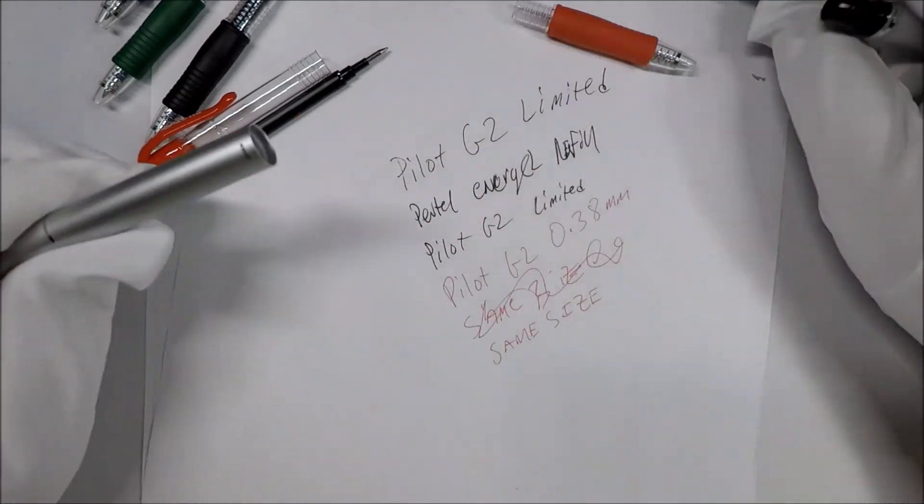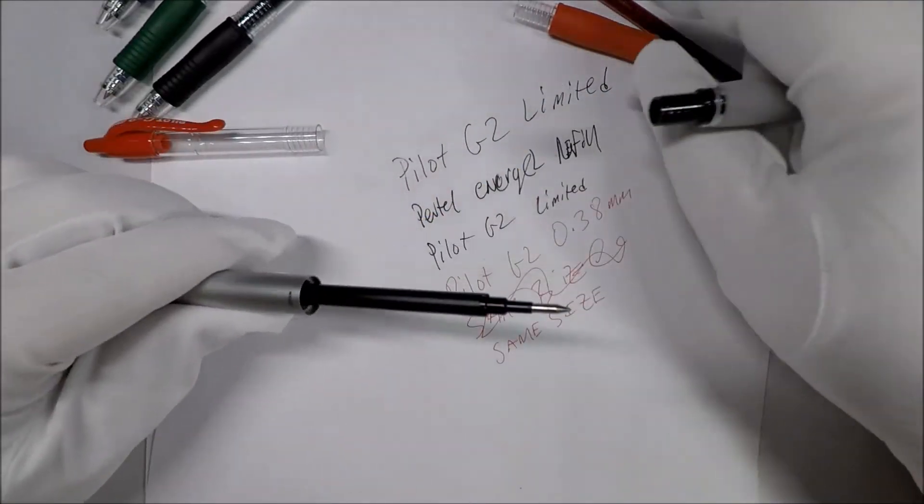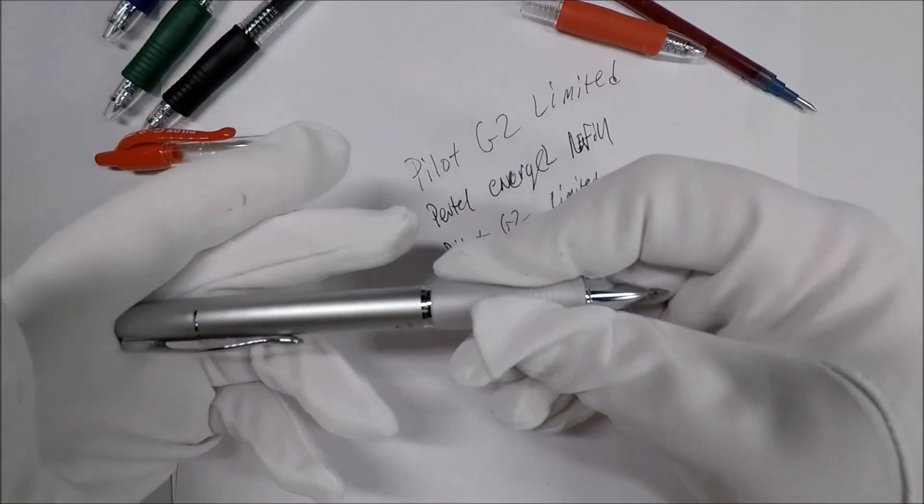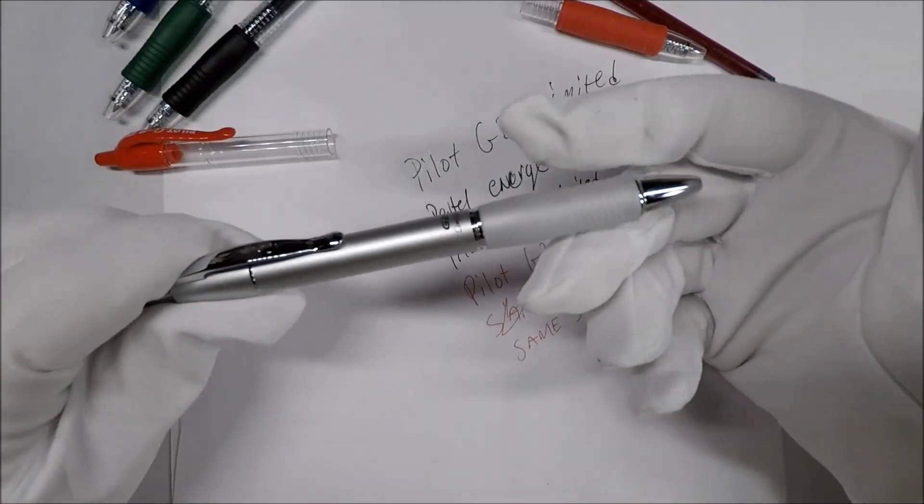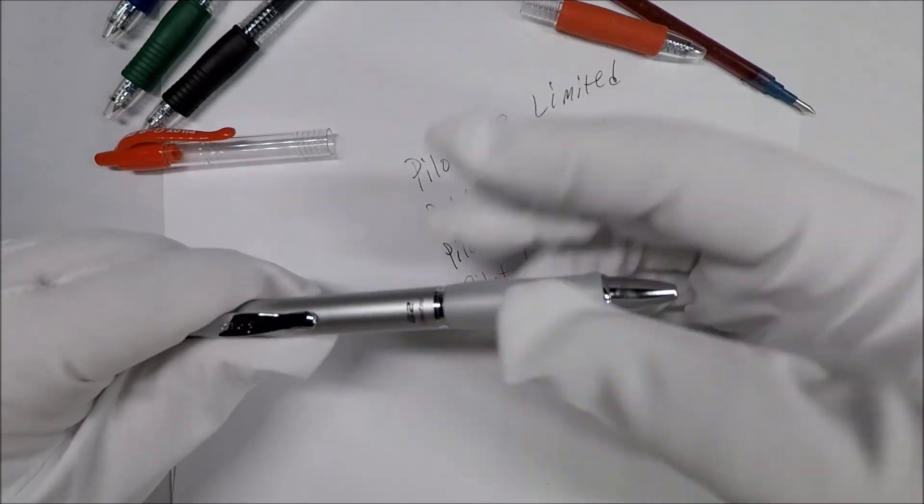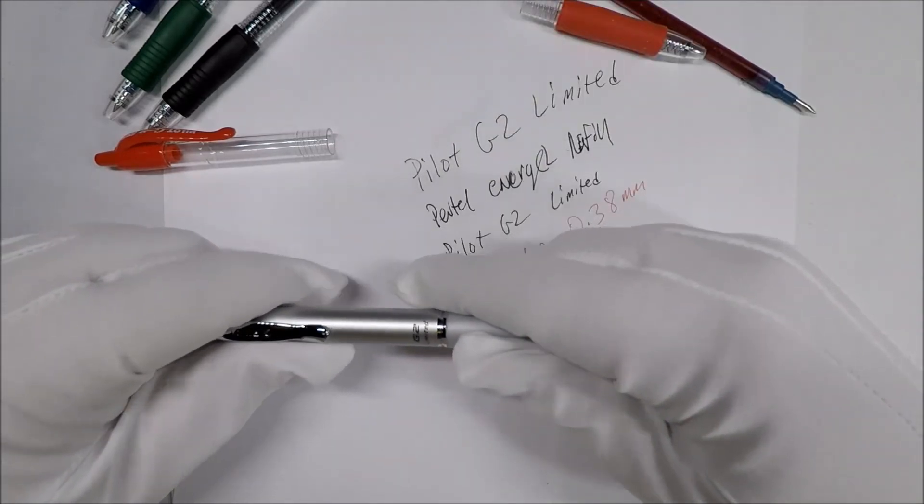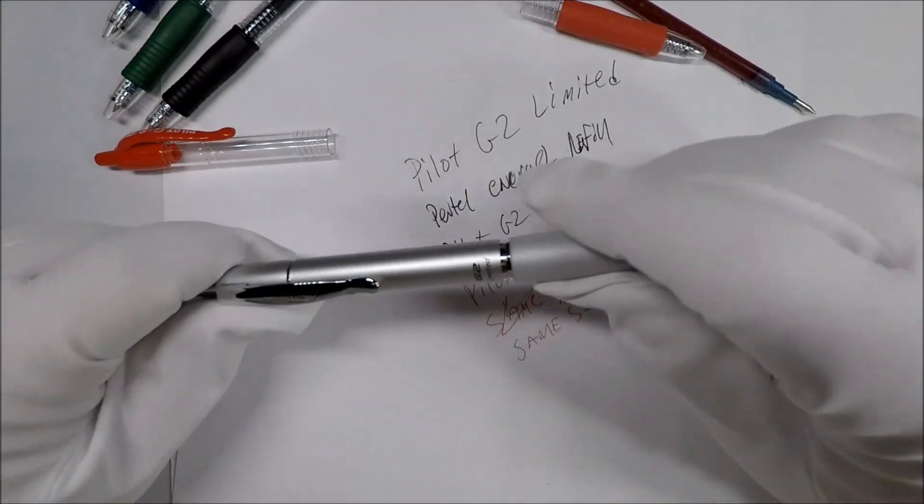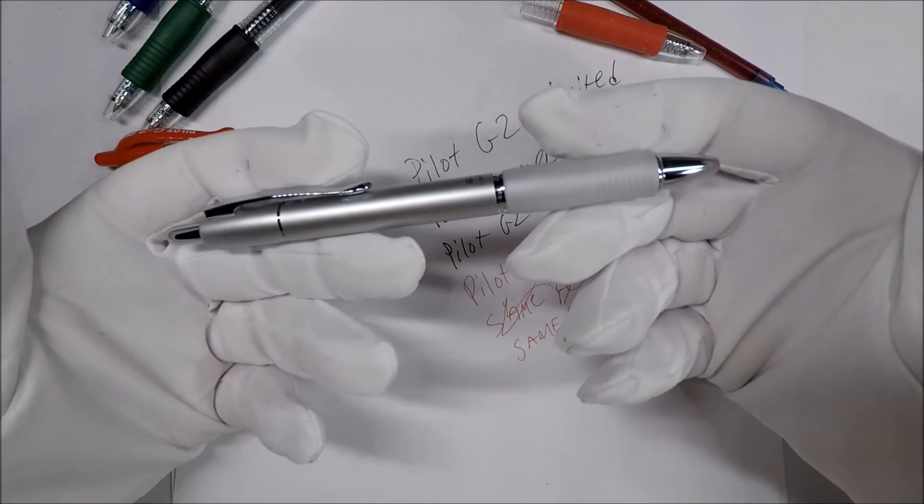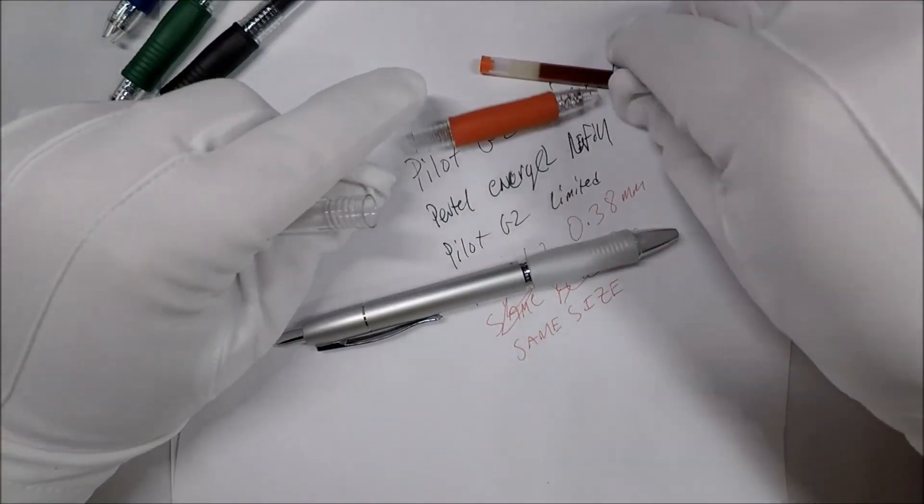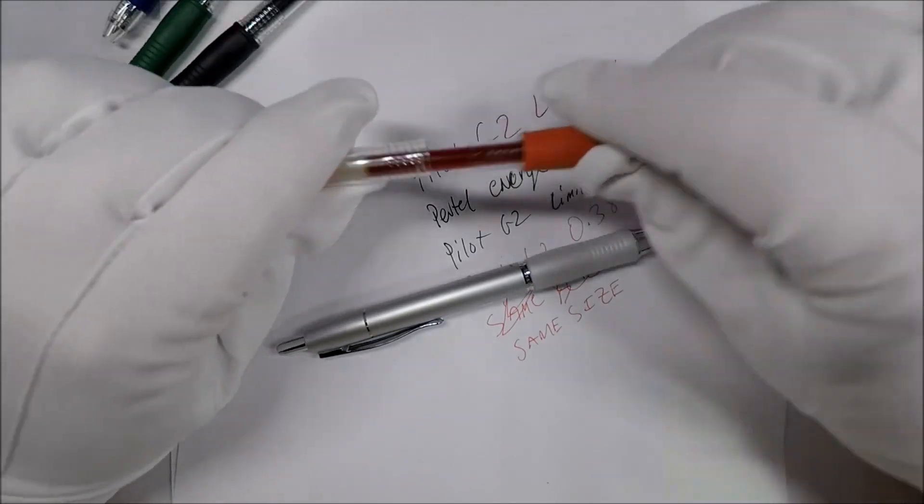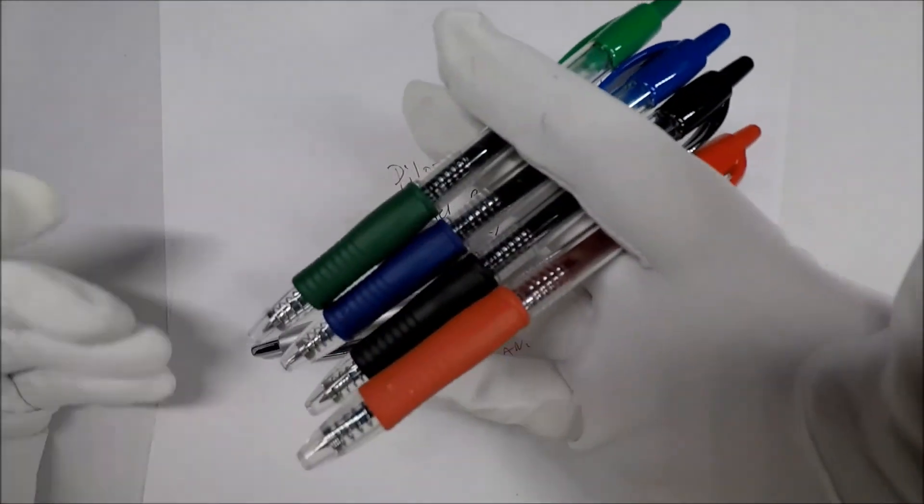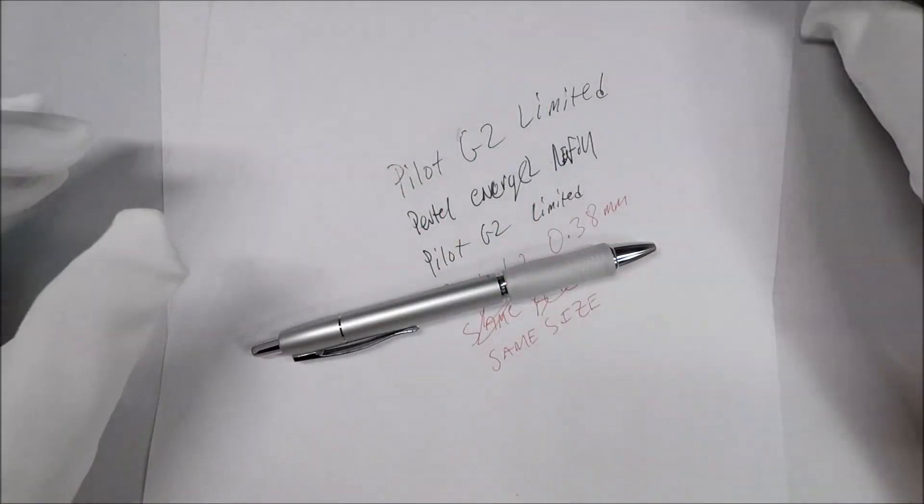The main difference here between the traditional ones and the Limited is it's a little bit heavier and it's got the metal parts to it. And they're not super expensive, I think it's like maybe 10 bucks. They're in the same price range as the Energel and the Zebra Sarasa. So if you're looking for a fancier G2, this is a cool choice. And you also have the added versatility of being able to use any of the other G2 refills you like. It's almost cheaper to just buy sets of pens than to buy refills.